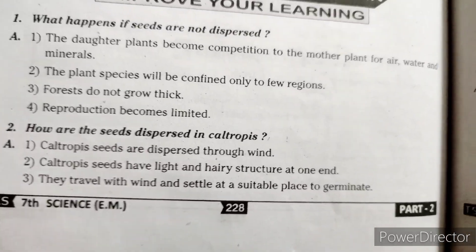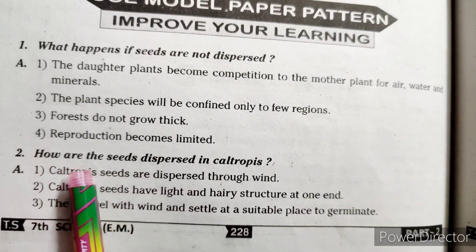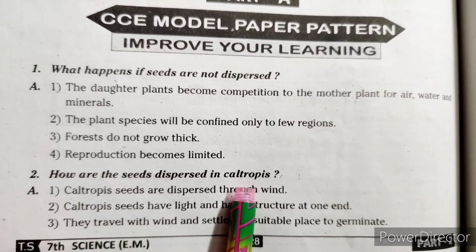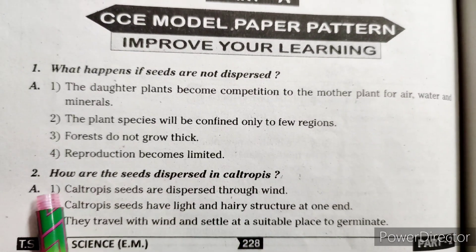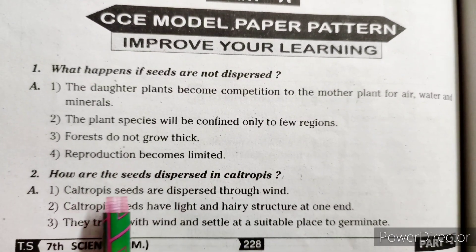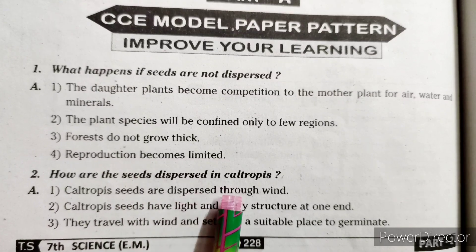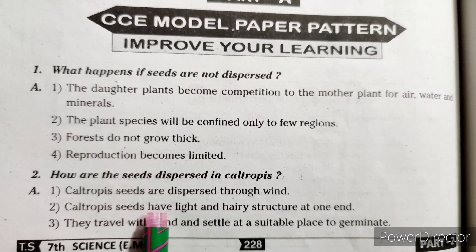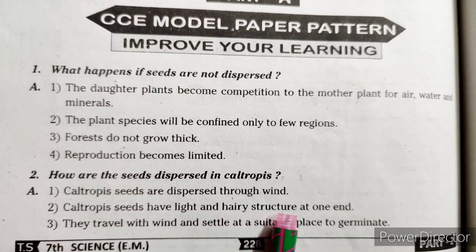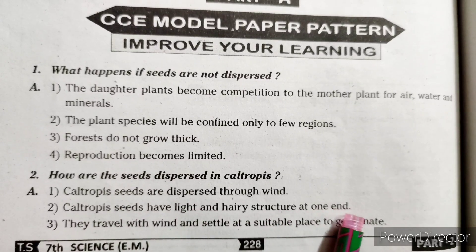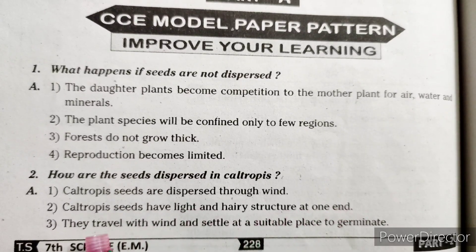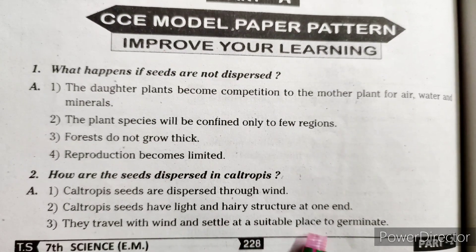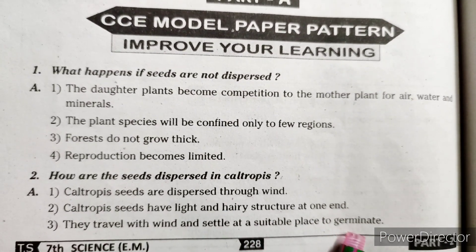Second question: How are the seeds dispersed in calotropis? Calotropis seeds are dispersed through wind. Calotropis seeds have a light and hairy structure at one end. They travel with wind and settle at a suitable place to germinate.